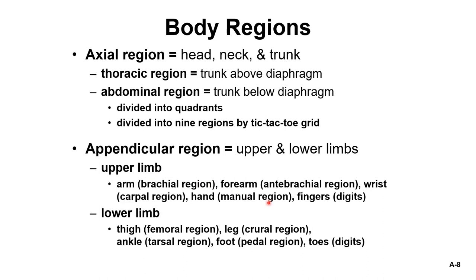The upper limb has different regions: your arm is the brachial region, your forearm is the antibrachial region, your wrist is the carpal region, your hand is the manual region, and your fingers are called digits. For the lower limb: the thigh is the femoral region, the leg is the crural region, the ankle is the tarsal region, the foot is the pedal region, and the toes are also called digits.